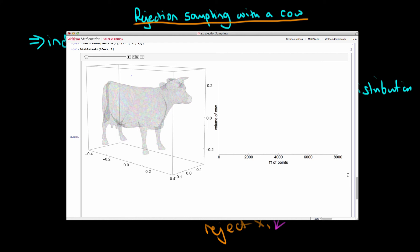Essentially all we do is we take the fraction of accepted to total number of points and multiply that by the volume of the bounding box, and that gives us an estimate of the volume.